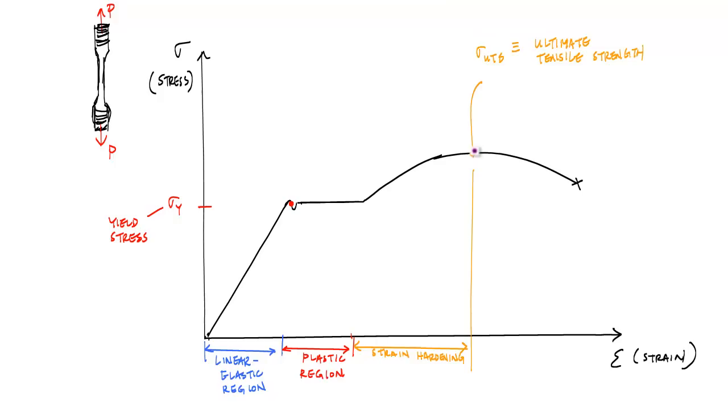You get to a point after you reach this, it starts decreasing again, the stress that's going on. Here is where we get fracture - sigma fracture, and this would be called the fracture strain where the specimen physically breaks.